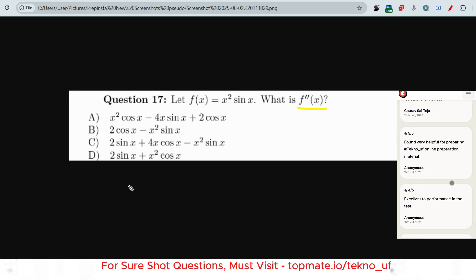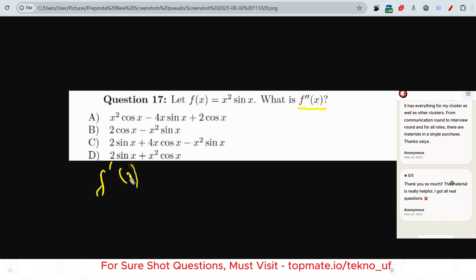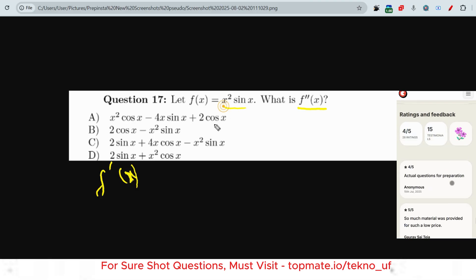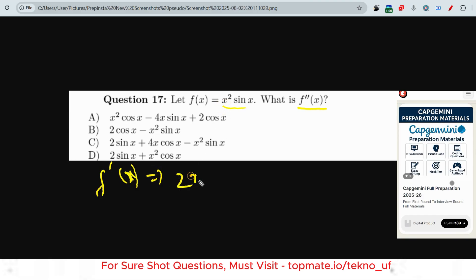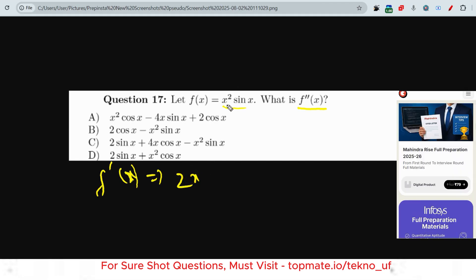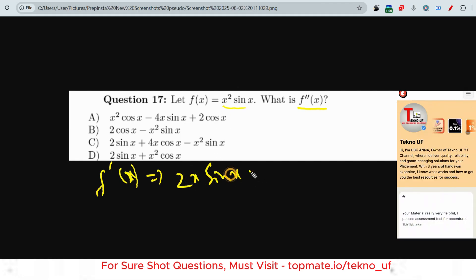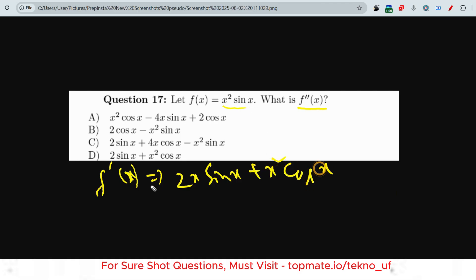Let me find f'(x) first. The value of f'(x) is 2x·sin(x) plus x²·cos(x). This is the value of f'(x). Now if I find f''(x), that will be 2·sin(x) — from the derivative of 2x·sin(x) — plus 2x times the derivative of sin(x), which is cos(x).